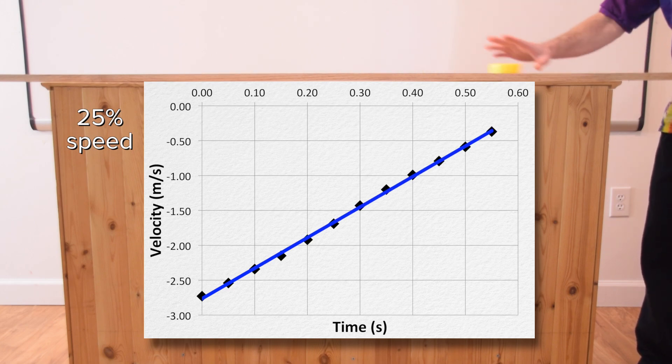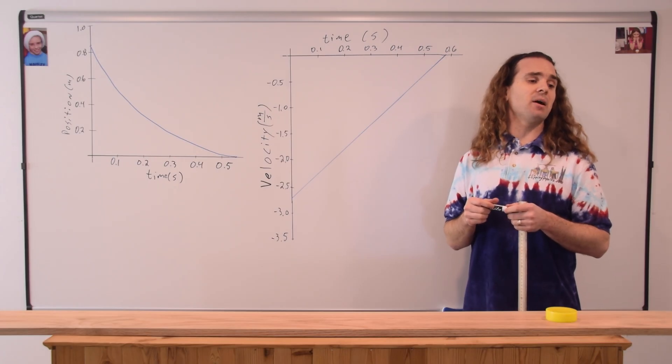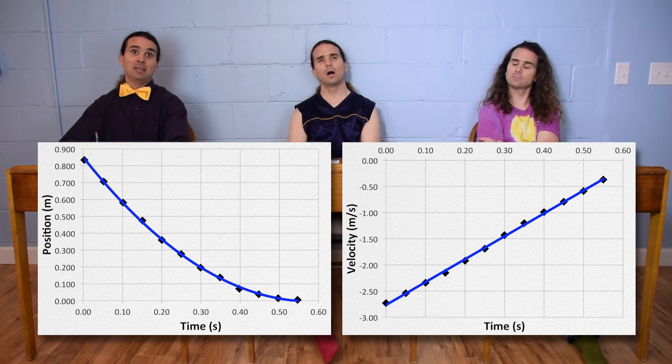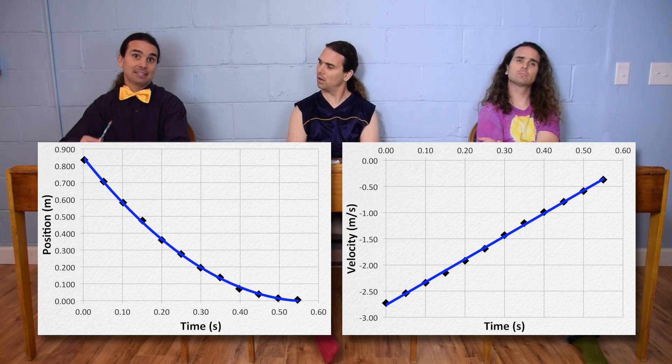Billy, why is the velocity of the puck negative? Because the puck is moving to the left. Correct.